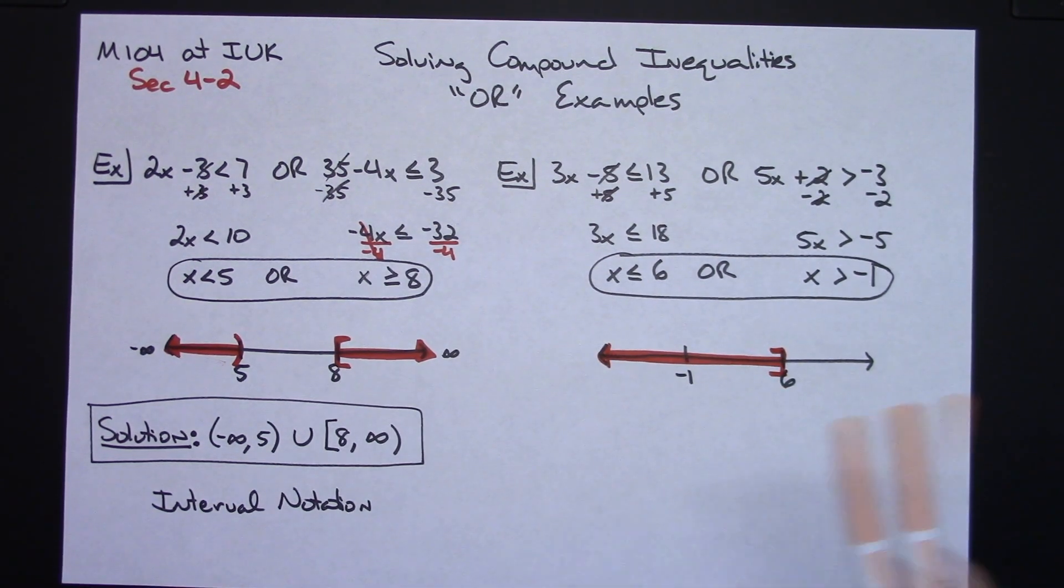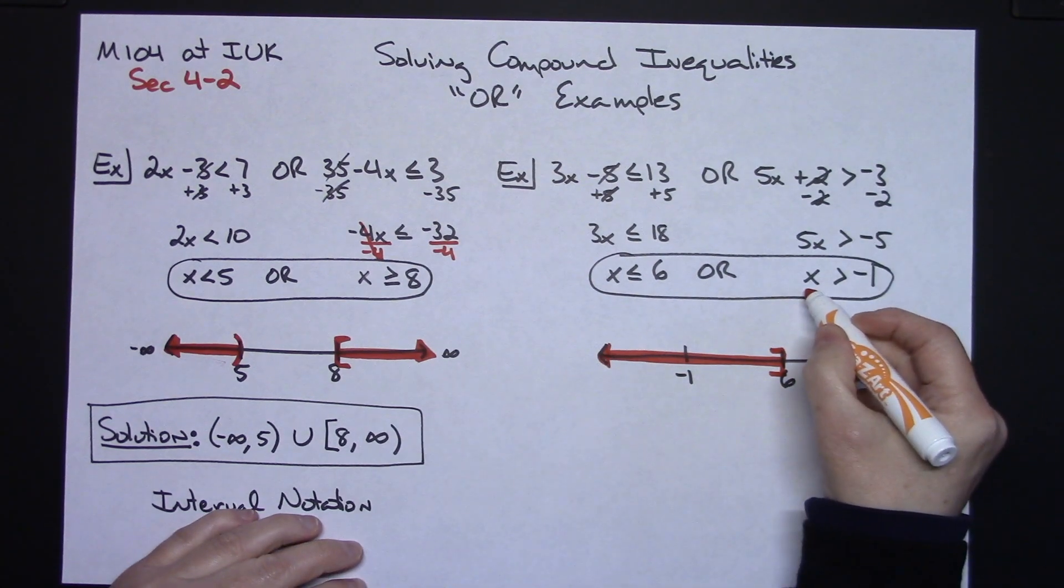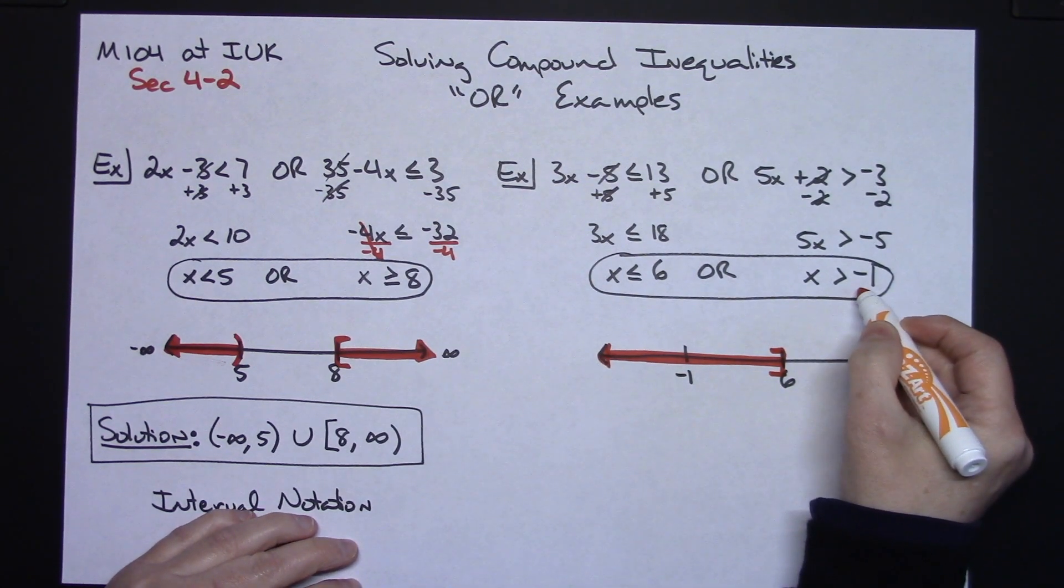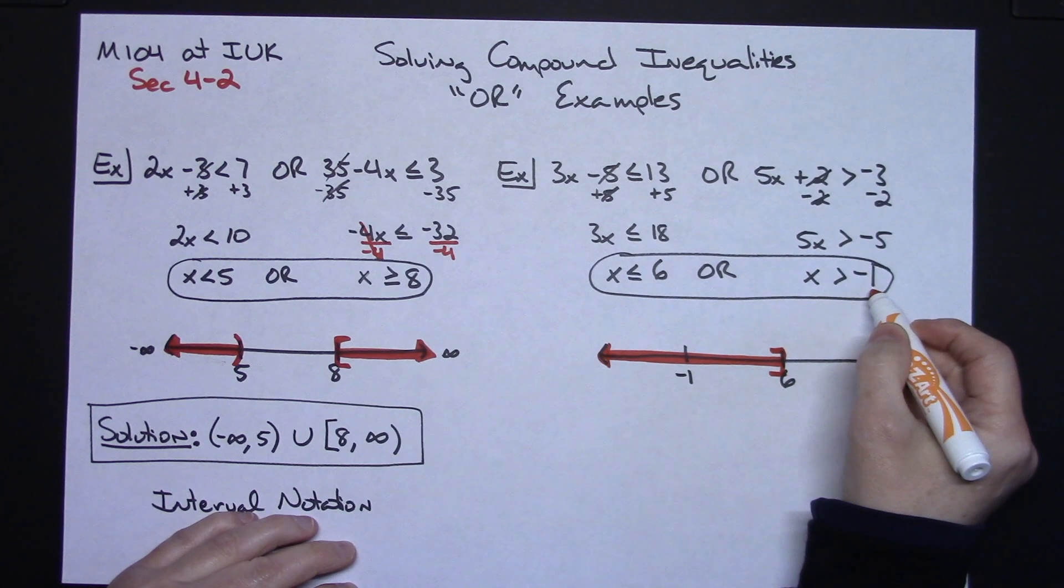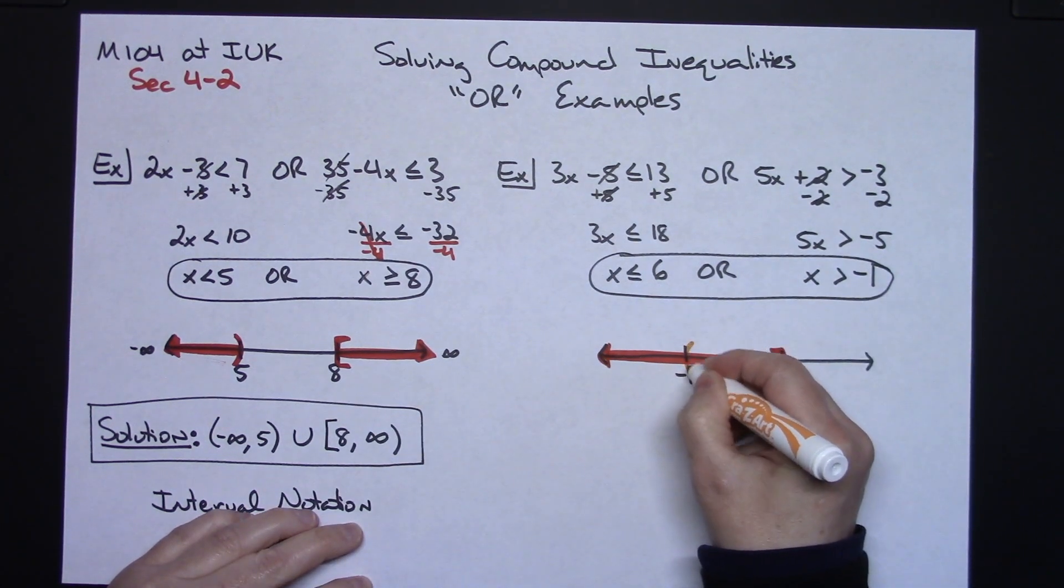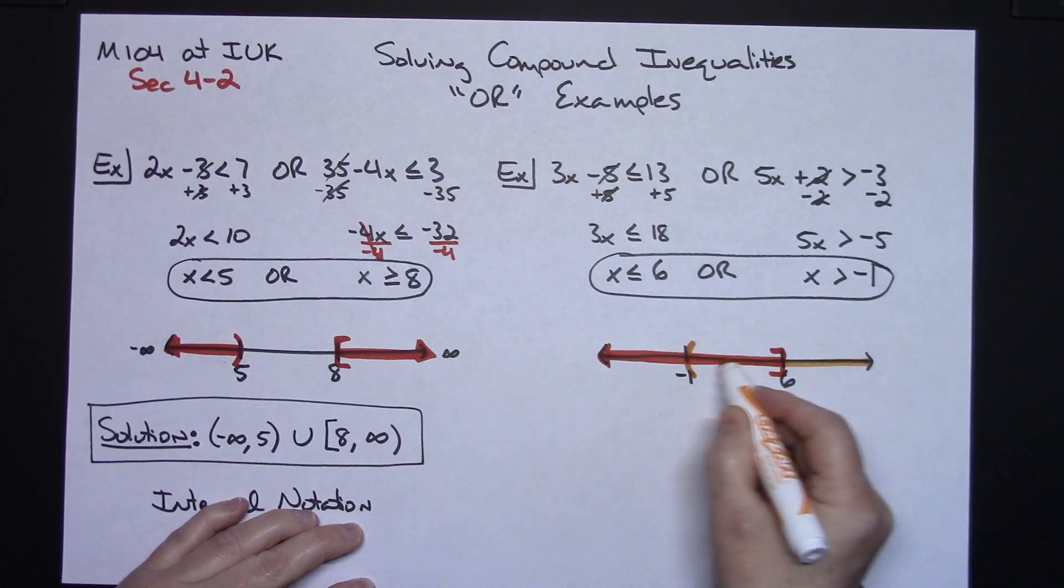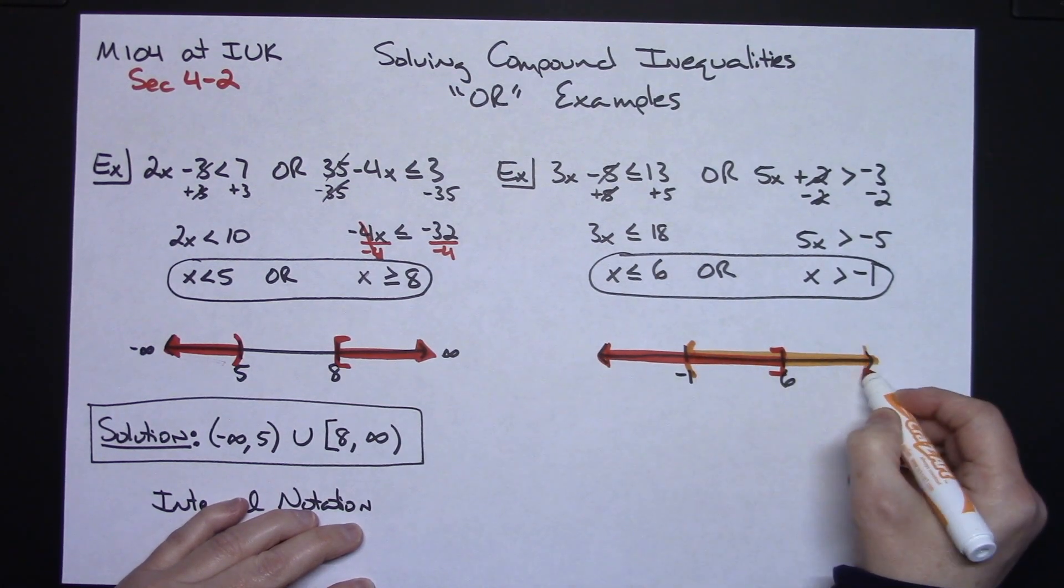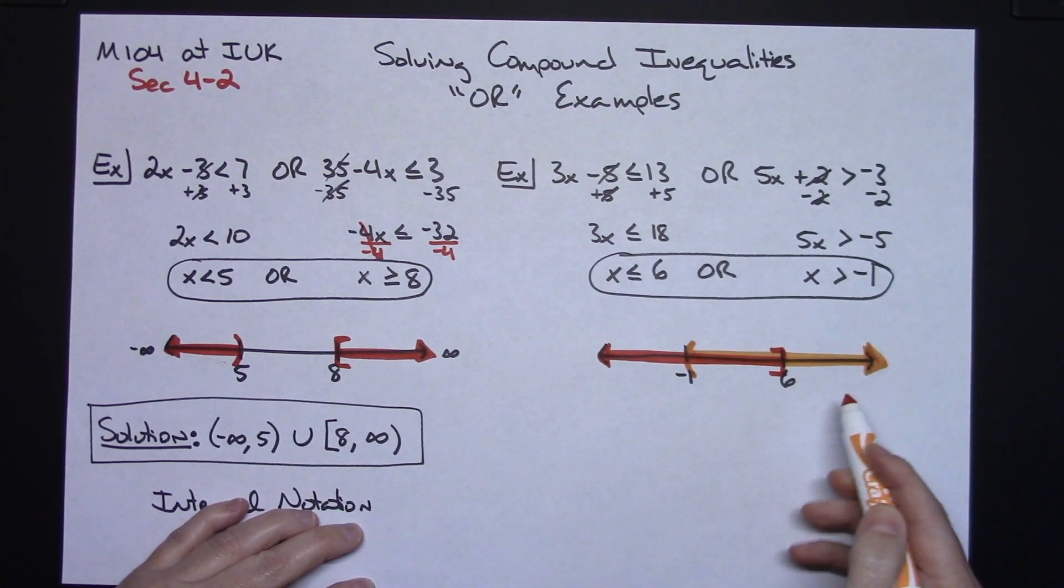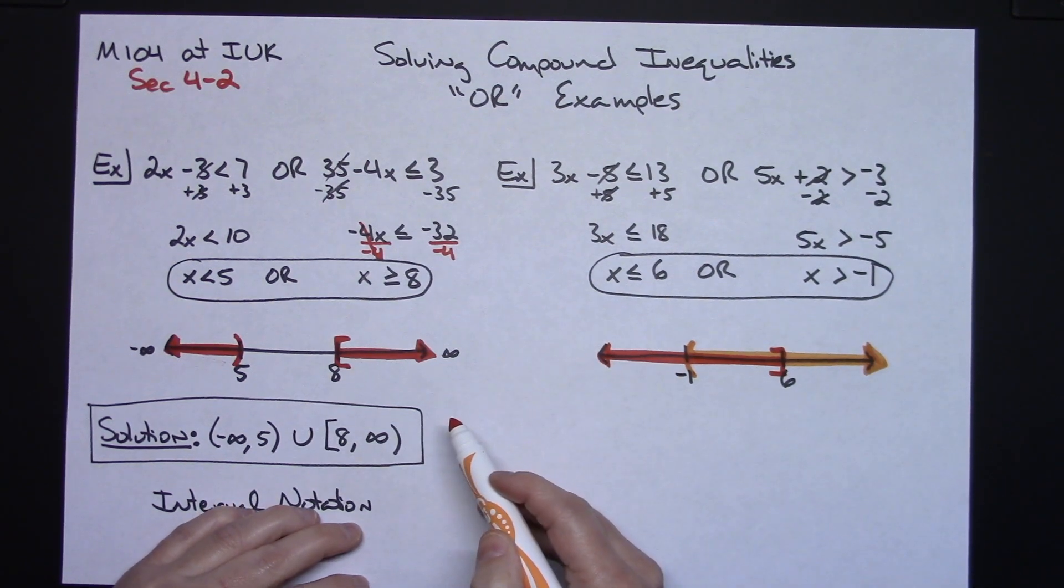Now let's go ahead and do this one. It says x is greater than negative 1. So x is greater than, so I'm not including 1, but the numbers that are greater than negative 1 would be all of these numbers. And as you can see, the whole entire number line got shaded.